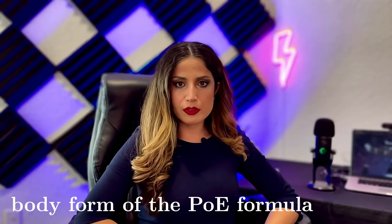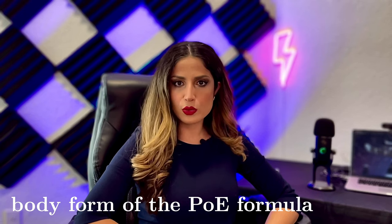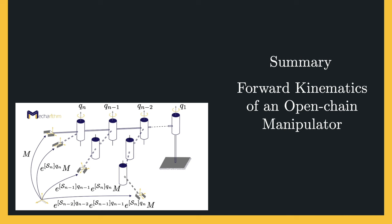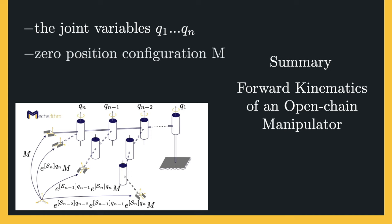This representation is the space form of the product of exponentials formula because the screw axes are expressed in the fixed space frame. Consequently, the forward kinematics is a product of matrix exponentials, each corresponding to a screw motion. There is also the body form, where joint axes are expressed in the end effector or body frame, but we will not study it here as it can be deduced from the space form. To summarize: to calculate the forward kinematics using the space form of the product of exponentials formula, we need the joint variables, the end effector configuration at home position (all joint variables zero), and the screw axes expressed in the fixed base frame at home position.